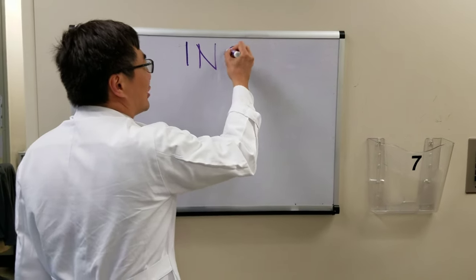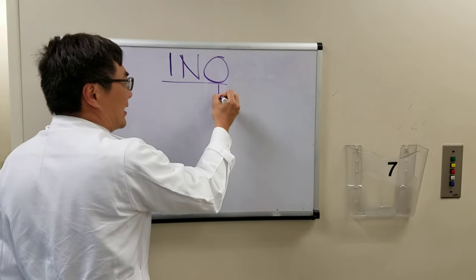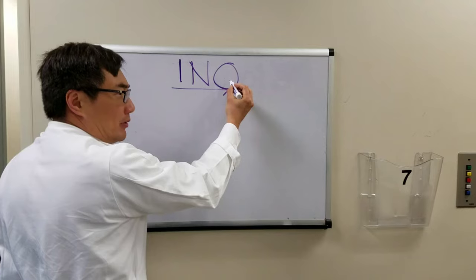Today we're going to be talking about internuclear ophthalmoplegia. This means plegia, weakness, of ophtho, the eye.